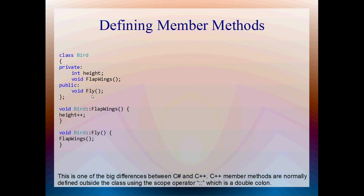Okay, so this is how you define the member method outside the body of the class. You can see at the top, the declaration of the class. We've got our two member methods, flapWings and fly. And underneath that, I've got the actual definition of those member methods. So flapWings and fly. And one of the biggest differences between C-sharp and C++. C++ member methods are normally defined outside. Yeah, again, if you're coming from a C-sharp or a Java background, you might be used to defining member methods within the class itself. But we don't do that in C++. Usually. Sometimes you do. But usually you don't. Usually you do it like this.